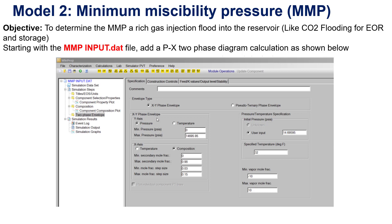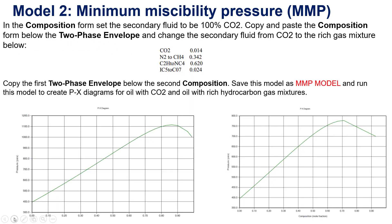This is just the overview for the data file. For each data file, the differences will be shown in the interface. I would like to touch the node like this. It shows in this slide the composition set for the secondary fluid to be 100% carbon dioxide. You copy and paste the composition from below into the two-phase envelope and change the secondary fluid injection form to carbon dioxide.